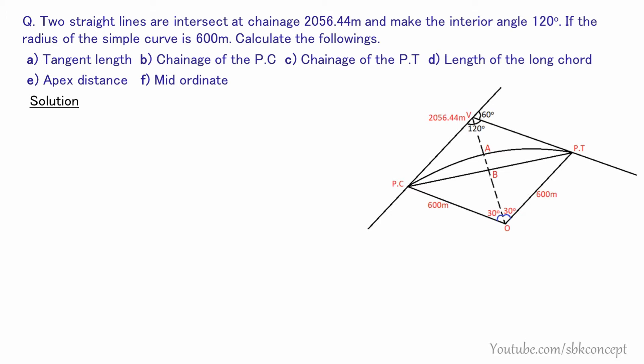The point of intersection, or vertex (PI), is shown. The PC is the point of curve — the beginning of the curve — where the line of alignment transitions from the straight line. On the right, PT is the point of tangency — the end of the curve — where the alignment returns to the straight line.